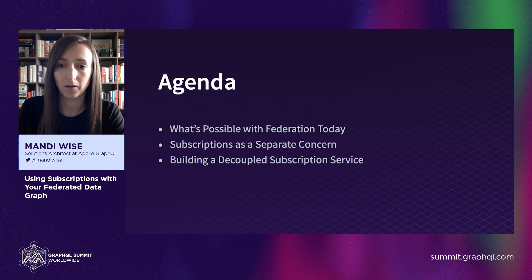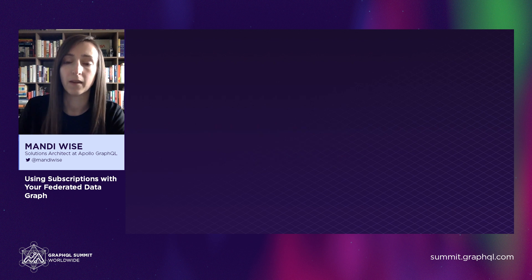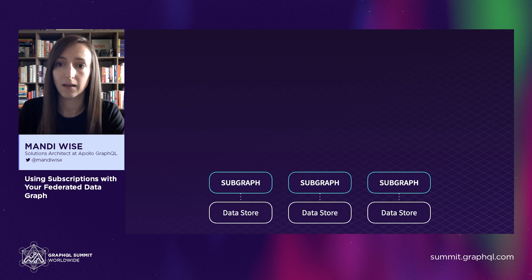Let's begin with Apollo Federation. Federation has been around for a couple years now, and since its release, it has allowed us to get a lot closer to realizing the dream of designing and building distributed GraphQL architectures that are both maintainable and that can easily facilitate cross-team collaboration. Specifically, Federation allows teams to embrace separation of concerns so that they can work on different products and features powered by a single datagraph without stepping on each other's toes.